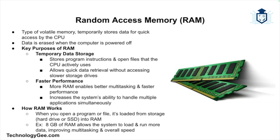Now let's discuss RAM, or Random Access Memory. RAM is a type of volatile memory, meaning it temporarily stores data that the CPU needs quick access to while performing tasks. Unlike permanent storage, data in RAM is erased when the computer is turned off. A key purpose of RAM is temporary data storage.